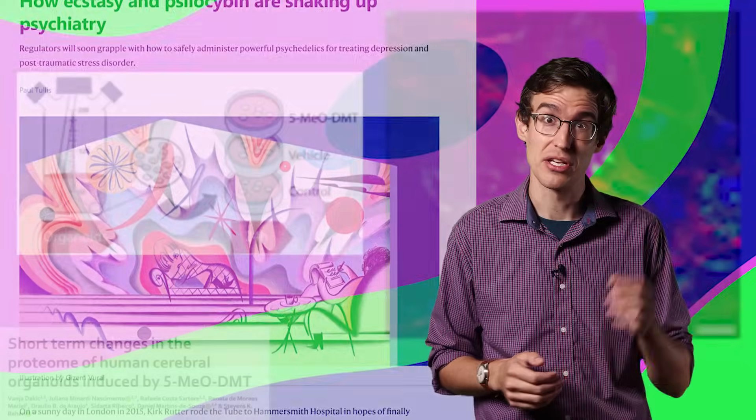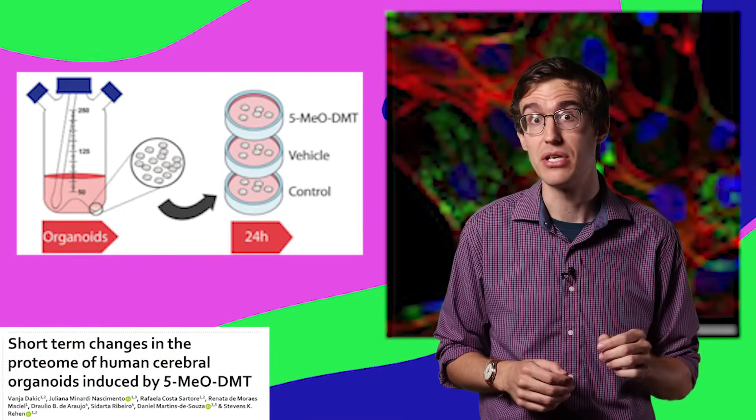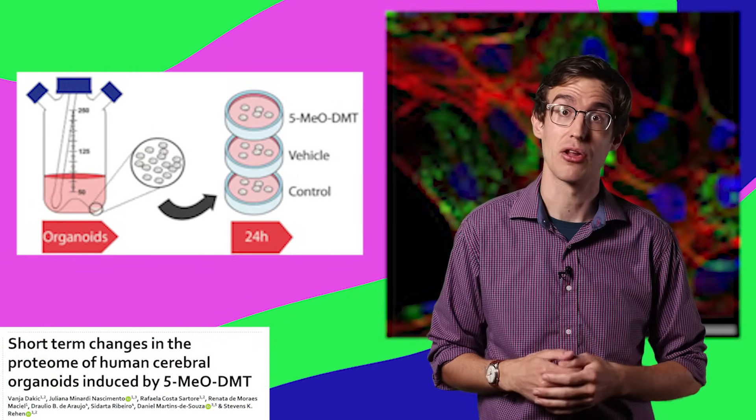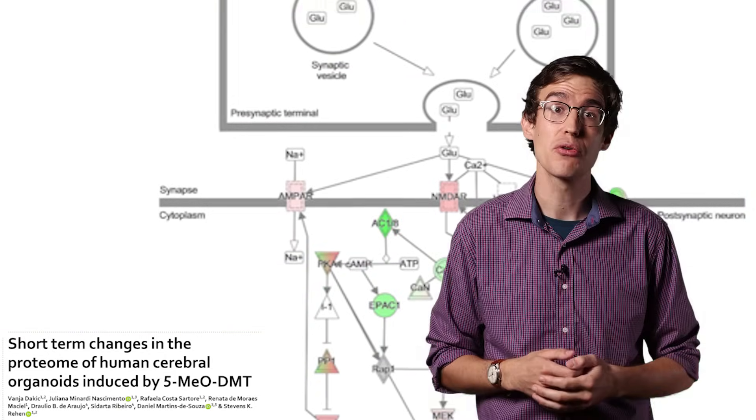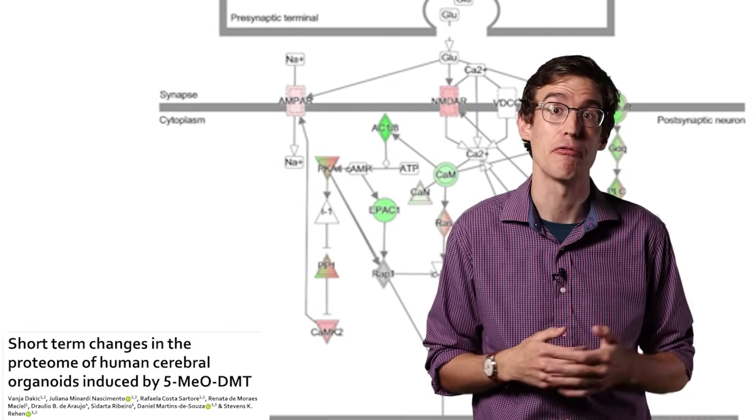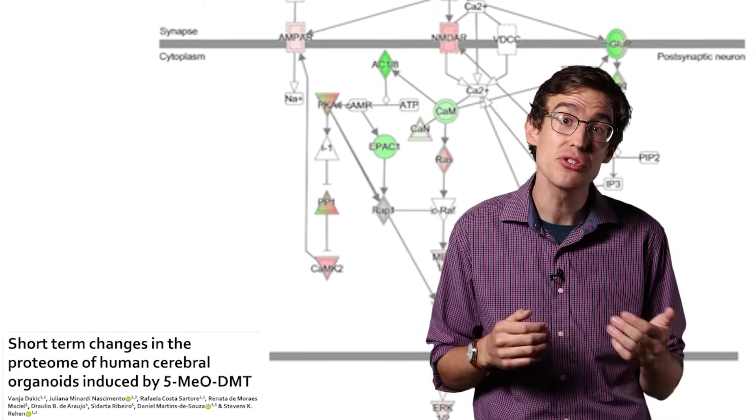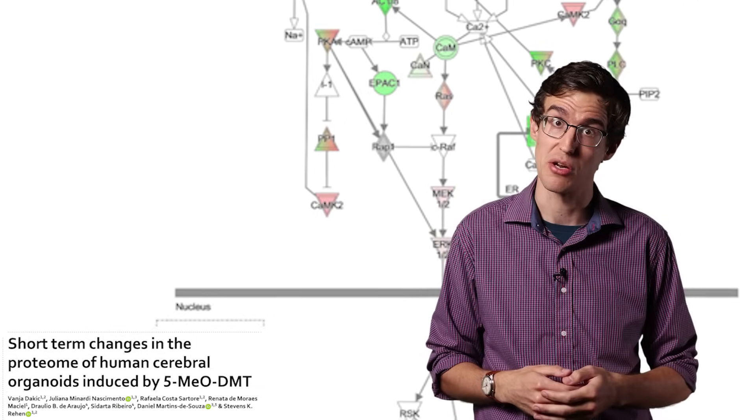So they dosed mini-brains with 5-MeO-DMT and looked for the molecular mechanisms. They found increased expression of proteins involved in learning and forming new neurons, and reduced expression of a receptor associated with addiction.